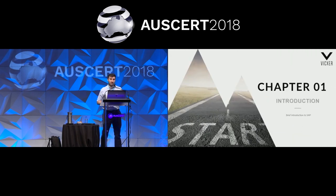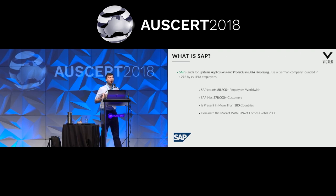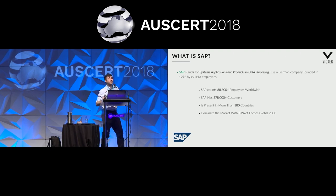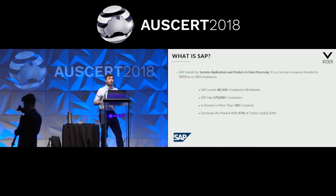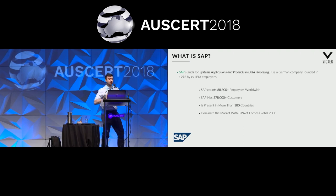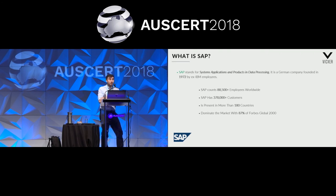So what is SAP? SAP is an acronym standing for Systems, Applications, and Products in Data Processing — no wonder people just call it SAP. It's a German company founded in 1972 by ex-IBM employees. Those guys were working together creating an ERP for IBM. That project got cancelled and they decided to leave IBM to create their own ERP. That was one of the most successful business decisions in the world. SAP has more than 88,000 customers worldwide, is present in more than 180 countries, and 87% of the Fortune Global 2000 companies are using SAP.